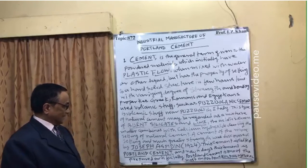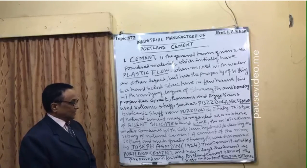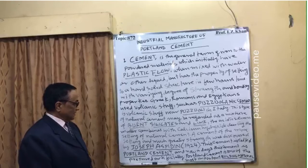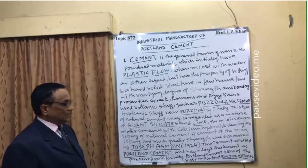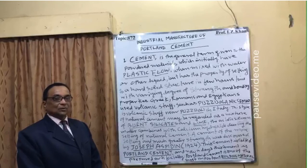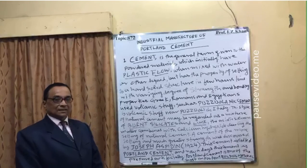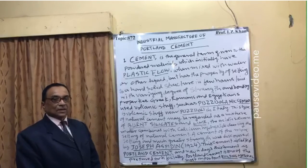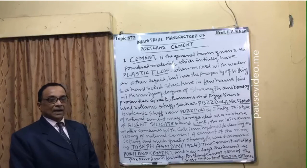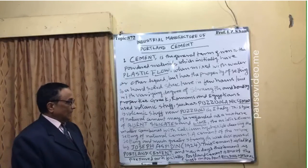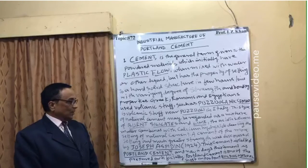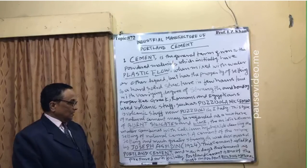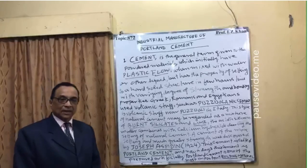Cement of much greater extent was discovered by the scientist known as Joseph Aspadin. He was the one who discovered the formula of synthetic artificial cement in the year 1924. From that year they started using his formula, and it is known as Portland cement. This cement is prepared artificially and is one of the most important building materials.